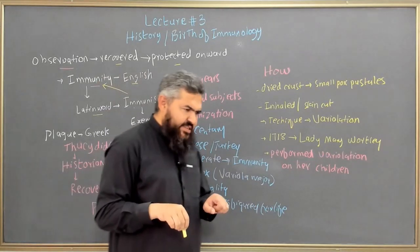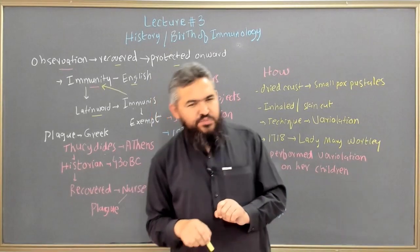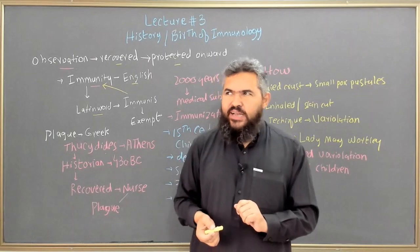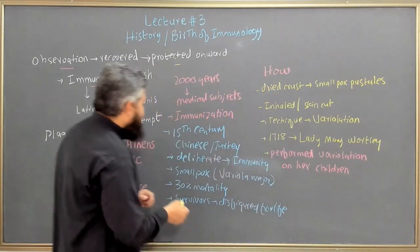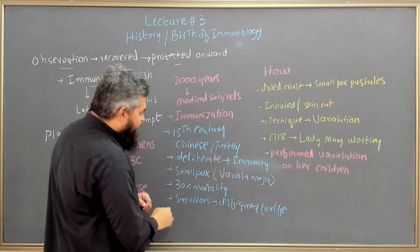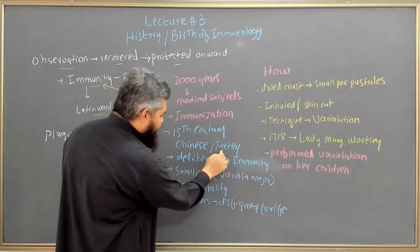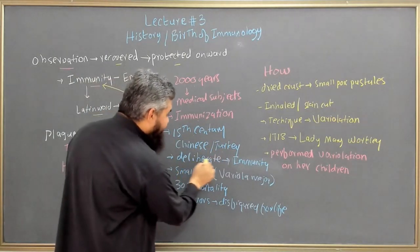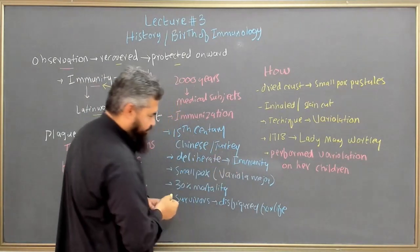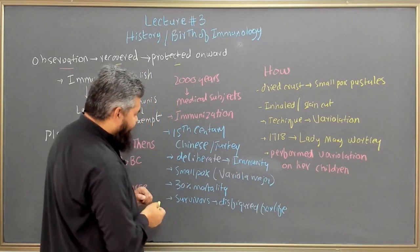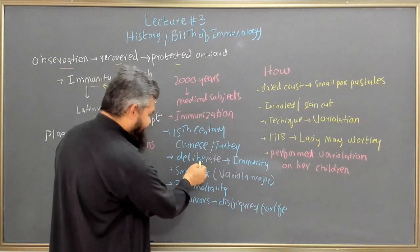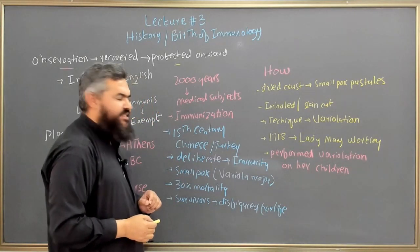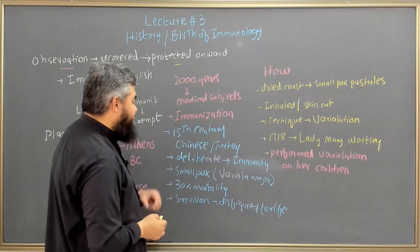If you go back to the experimental history of this fascinating subject, it started with the process of immunization. The Chinese and the Turks in the 15th century were the first to deliberately induce immunity in individuals. This was not a natural infection — in the 15th century they started doing this deliberately.